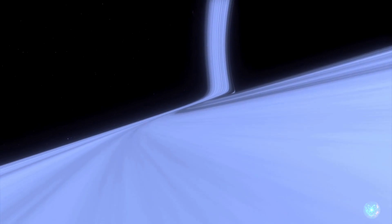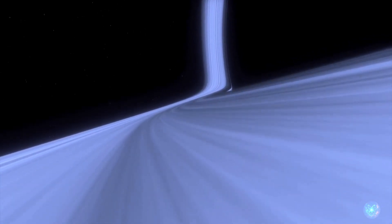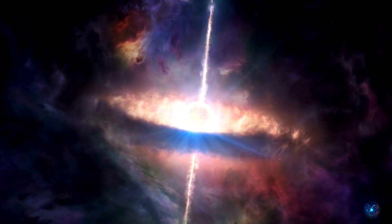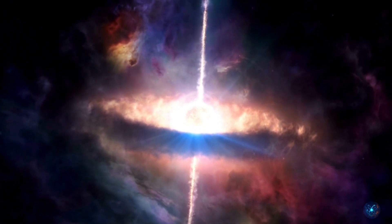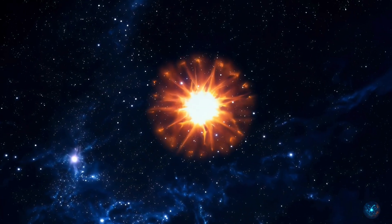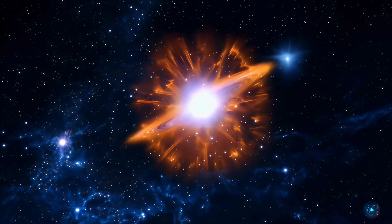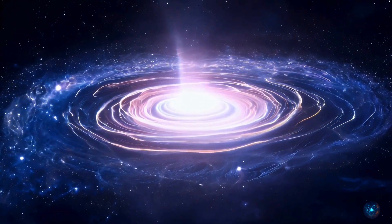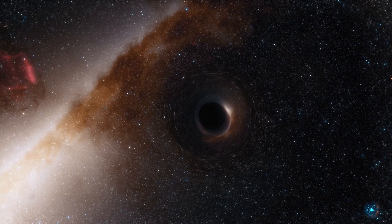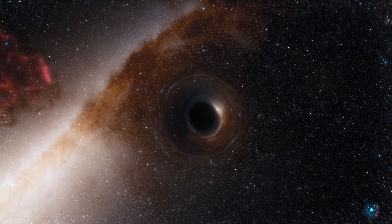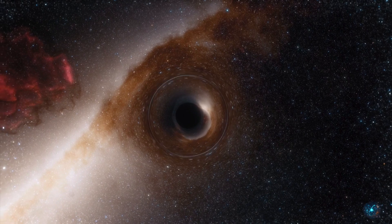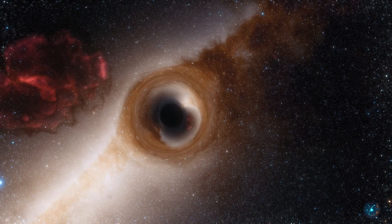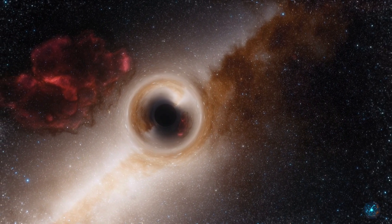Most black holes form when massive stars die. After burning through all their fuel, the star explodes in a supernova and the core collapses under its own gravity. If the remaining mass is large enough, it collapses into a black hole. There are also supermassive black holes, millions or billions of times the mass of the sun, sitting at the centers of galaxies, including our own Milky Way. No one knows exactly how these giants formed. Some theories say they grew by swallowing stars, gas, and even other black holes. Others think they were born just after the Big Bang.